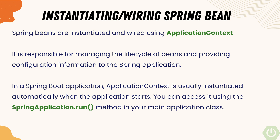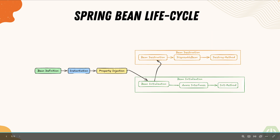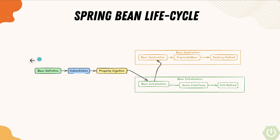I keep talking about the Spring Bean object creation, its management, and also the decommissioning of the bean in its lifecycle. Let's see in a nutshell how the bean lifecycle looks. The first part is the bean definition — this refers to the metadata provided for the Spring container to understand what bean needs to be instantiated, including scope, dependencies, and lifecycle callbacks.